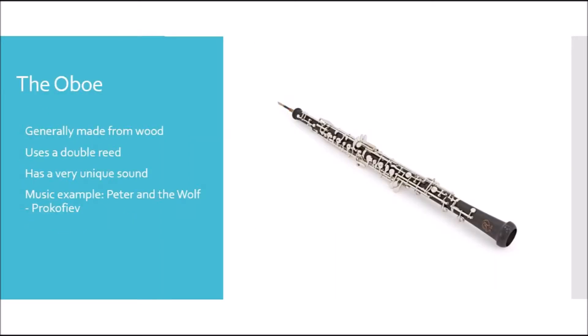The next instrument in the woodwind family that we will talk about is the oboe. Like the clarinet, the oboe is generally made from wood and has metal keys, as you can see in the picture to the right. However, it uses a double reed, which makes it have a very unique sound. The musical example we will hear is from Peter and the Wolf by Prokofiev.